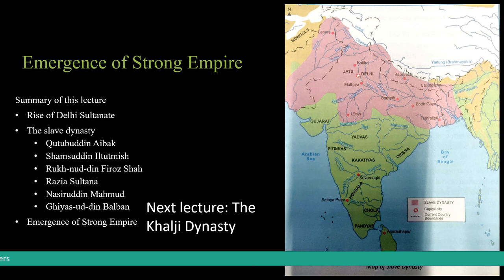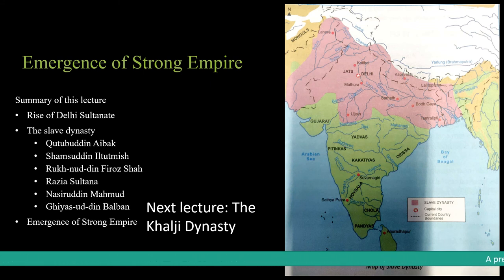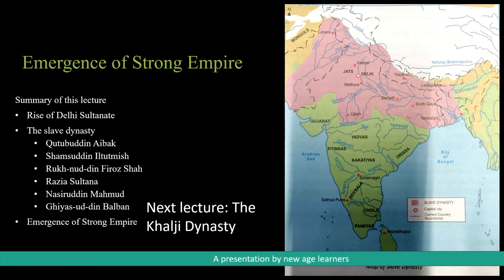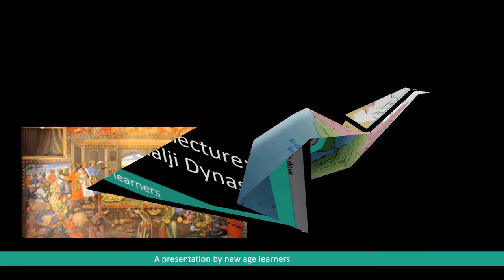In the next lecture, we will be continuing with the Khalji dynasty. To summarize what we have covered in this lecture: we talked about the rise of Delhi Sultanate, the slave dynasty and its rulers — Qutubuddin Aibak, Shamsuddin Iltutmish, Razia Sultana, and Giyasuddin Balban — and how this strong empire emerged. I hope this has helped you with this part of the chapter, and the rest we will be covering in the next lectures. Thank you.